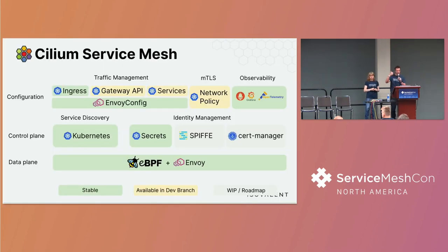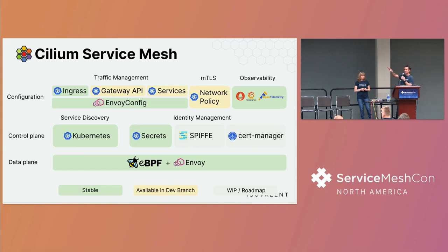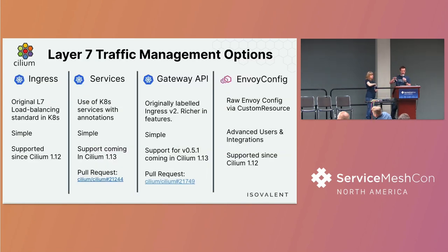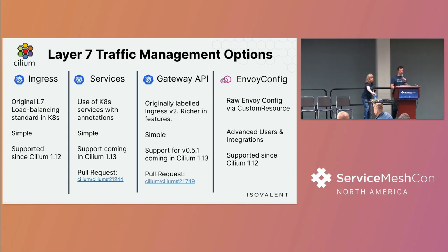The last part is traffic management — how to define and use traffic management in Cilium Service Mesh. The individual configuration options are: Ingress, Gateway API, Kubernetes services with annotations, and raw Envoy config. The data plane is eBPF and Envoy. Ingress and Envoy config are already fully supported in 1.12. Services with annotations and Gateway API are coming in 1.13 — the code is complete, just not yet merged, but available in dev branches for testing if you are interested.